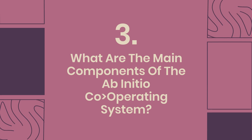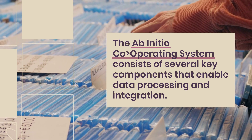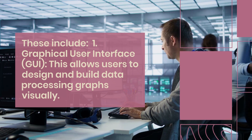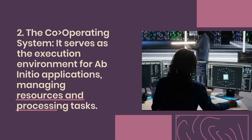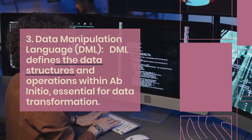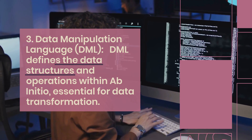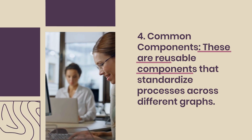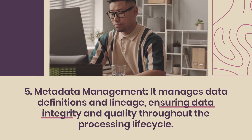Question 3: What are the main components of the AbInitio co-operating system? The co-operating system consists of several key components: 1) Graphical User Interface (GUI) — allows users to design and build data processing graphs visually; 2) The co-operating system itself — serves as the execution environment, managing resources and processing tasks; 3) Data Manipulation Language (DML) — defines data structures and operations, essential for data transformation; 4) Common Components — reusable components that standardize processes across different graphs; and 5) Metadata Management — manages data definitions and lineage, ensuring data integrity and quality throughout the processing lifecycle.